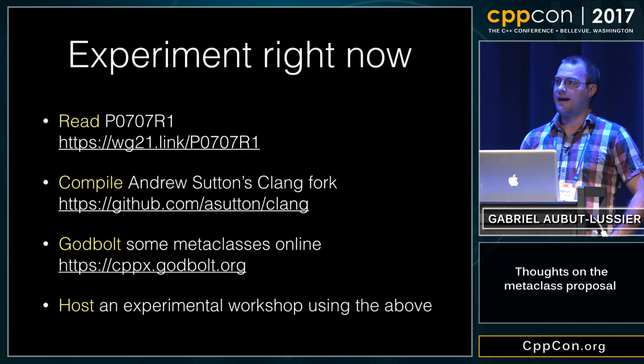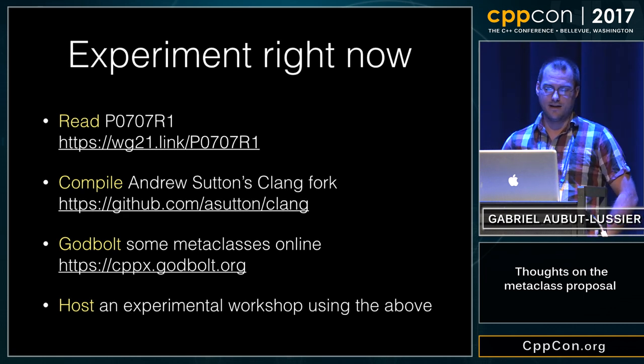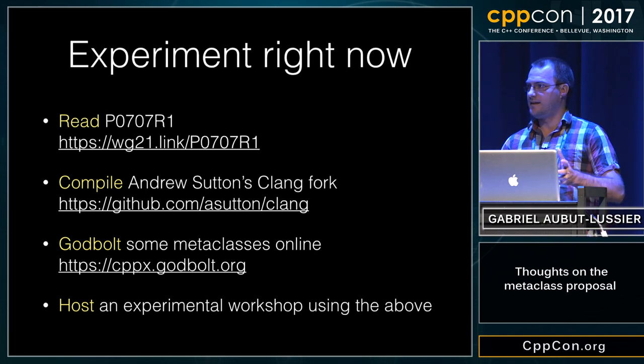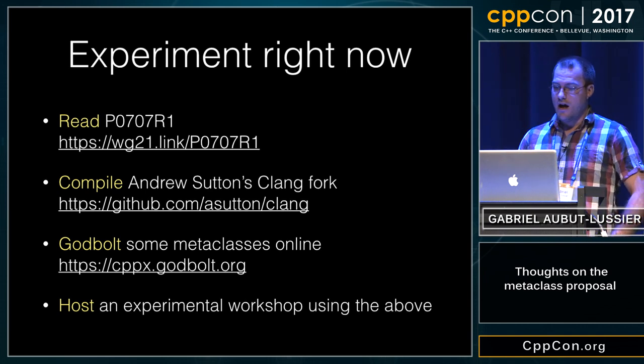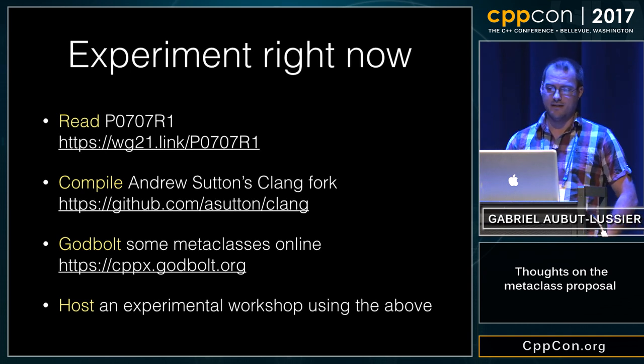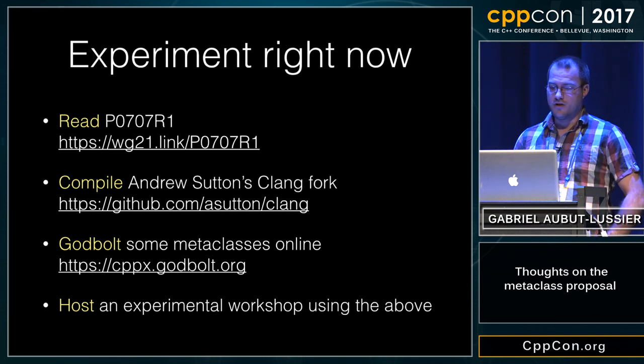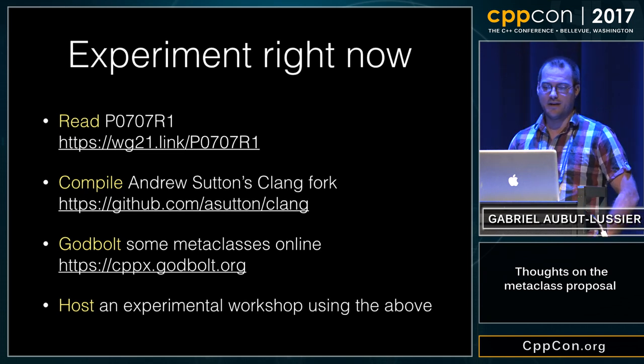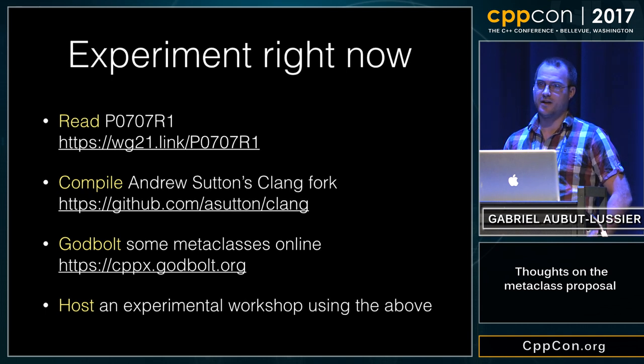This could be very interesting. I encourage you all to read the proposal — it's very thrilling to read, not verbose at all, with a lot of examples of how this can be applied. You can also compile Andrew Sutton's Clang fork, which you can find on GitHub with the link on the slide. And you can Godbolt some Metaclasses online right now at cppx.godbolt.org. I encourage you to host an experimental workshop at your local meetups using those tools. We've given it a try at C++ Montreal and we've had a blast. Thank you.